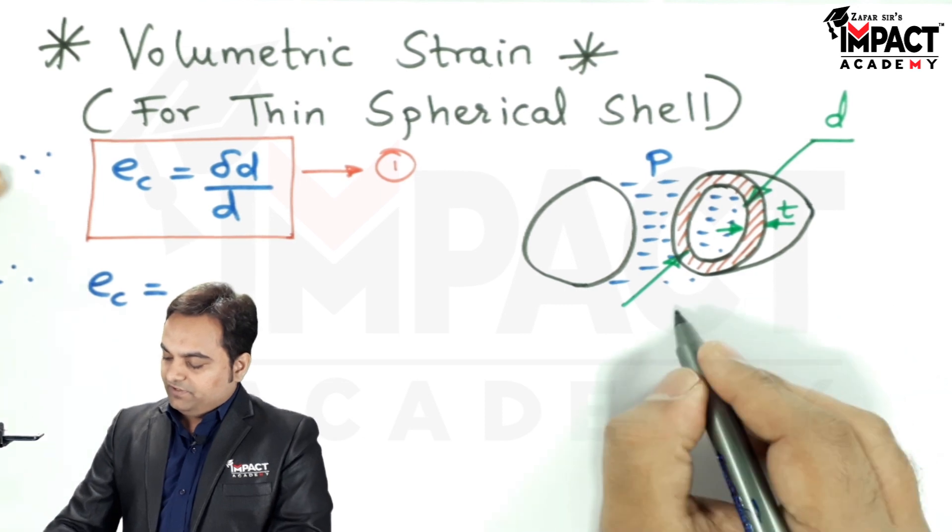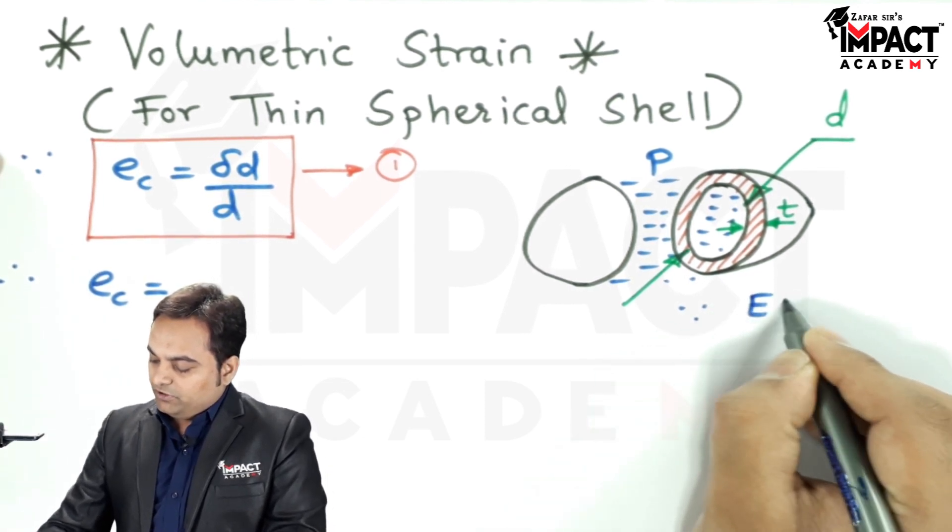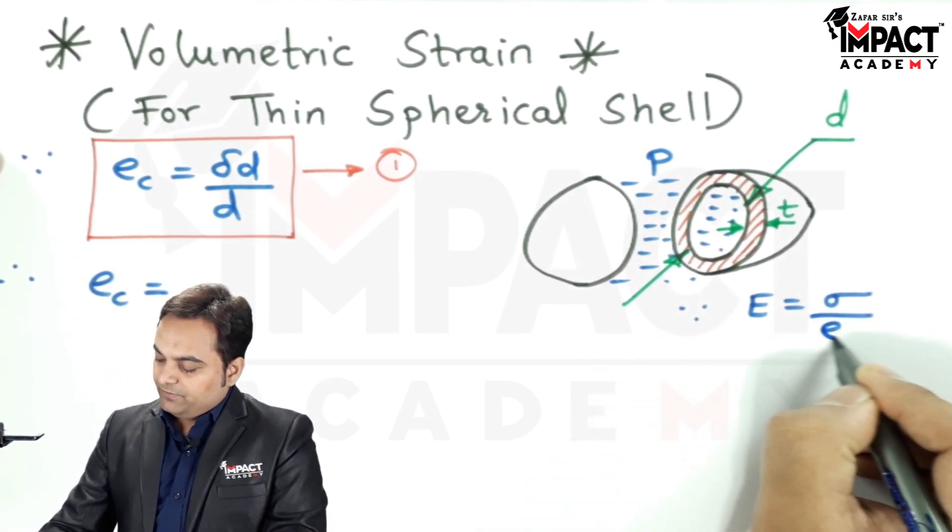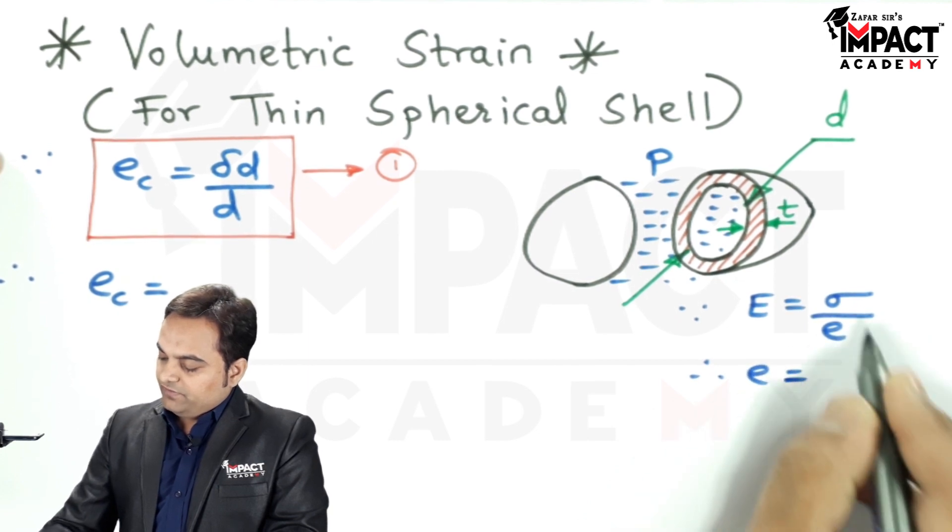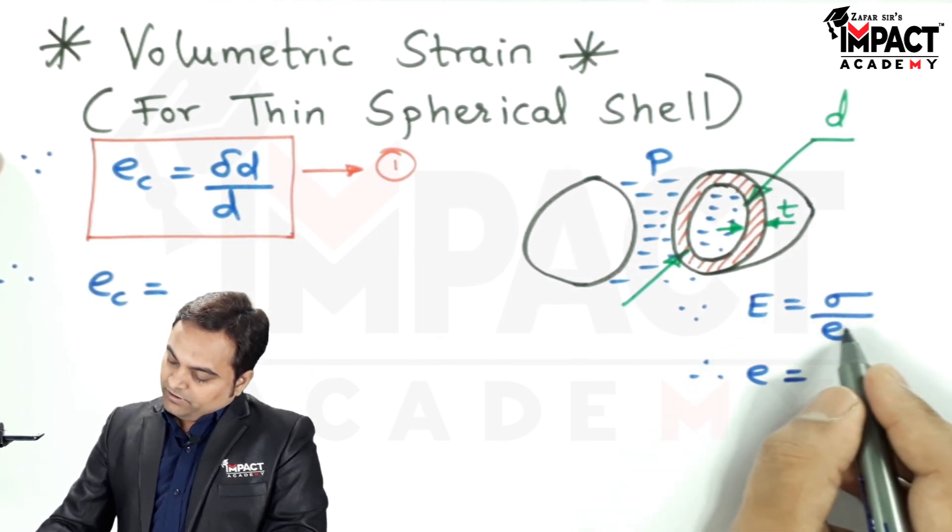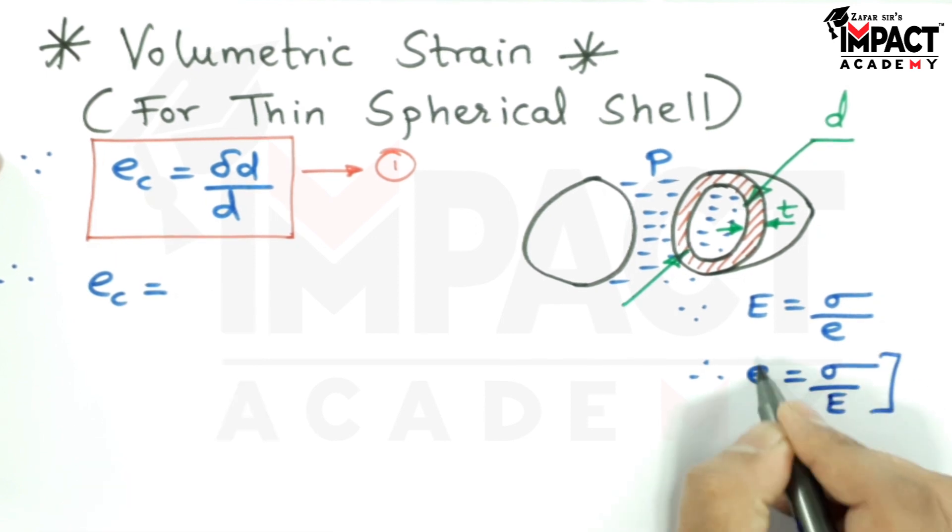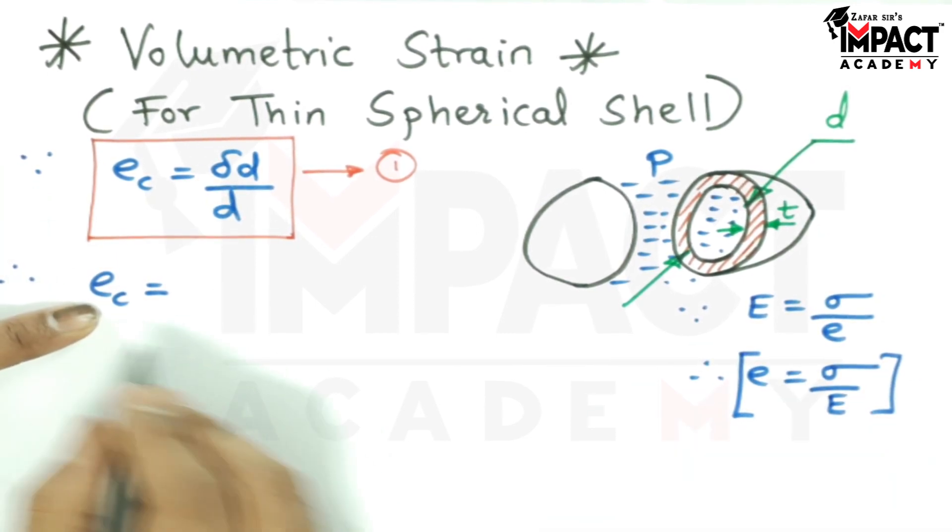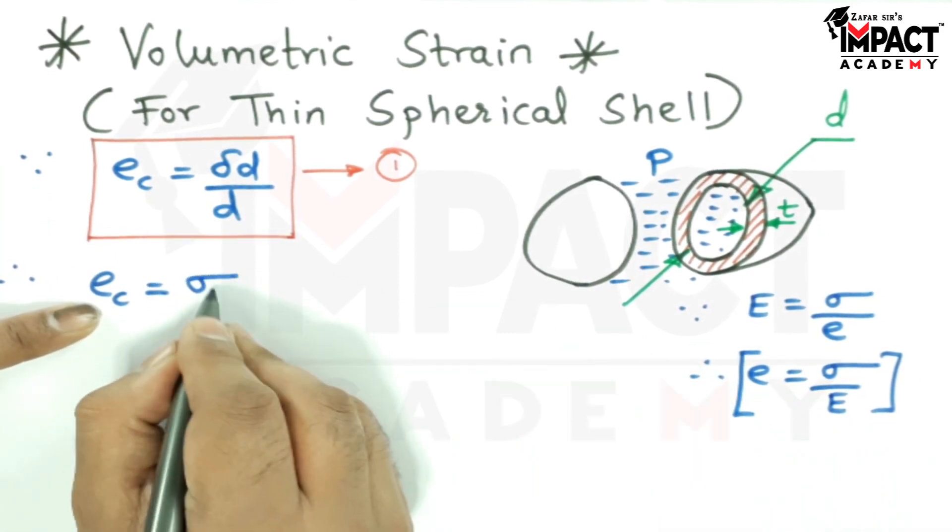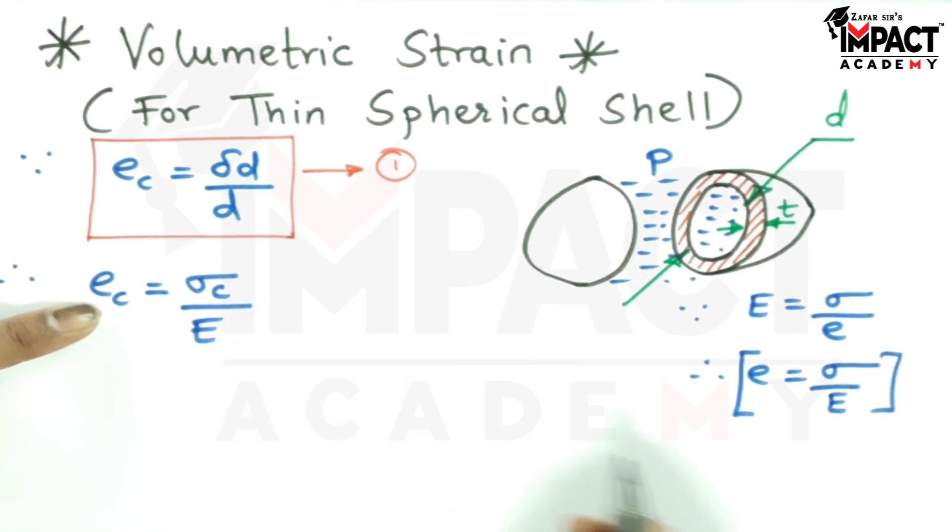that would be from Hooke's law, we can say that since the Young's modulus is stress upon strain, so therefore strain is stress upon Young's modulus. So, circumferential strain would be the circumferential stress upon Young's modulus.